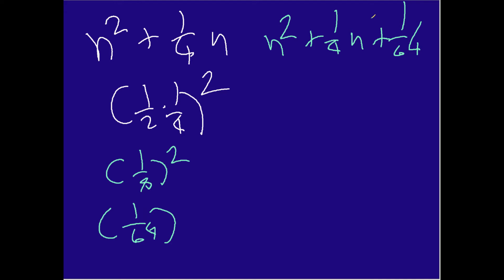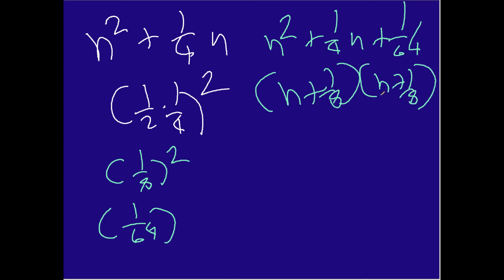I need to figure out what number when added gives 1 fourth, and when multiplied gives 1 over 64. If you find the square root of that bottom number it helps a lot. The answer is n plus 1 over 8, times n plus 1 over 8. You can verify: 1 over 8 times 1 over 8 is 1 over 64, and 1 eighth plus 1 eighth is 1 fourth. And n times n is n squared. So to simplify, we get n plus 1 over 8 squared — that's our answer.